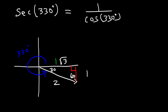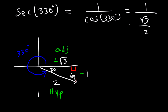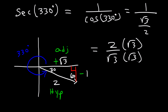In quadrant 4, x is positive and y is negative. Cosine of 330 is adjacent over hypotenuse, and since cosine is positive in quadrant 4, it equals √3 over 2. Secant is the reciprocal, so 1 divided by (√3/2) is 2/√3. Rationalizing gives secant of 330 equals 2√3 divided by 3.